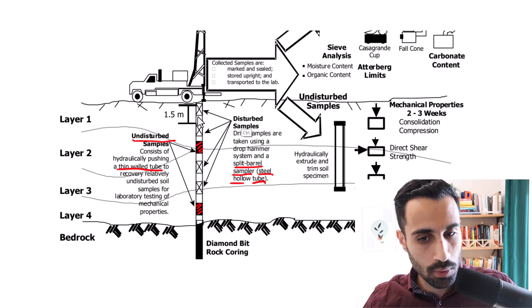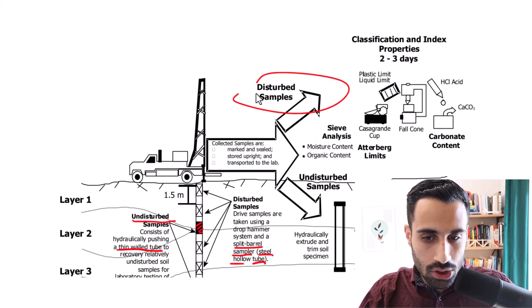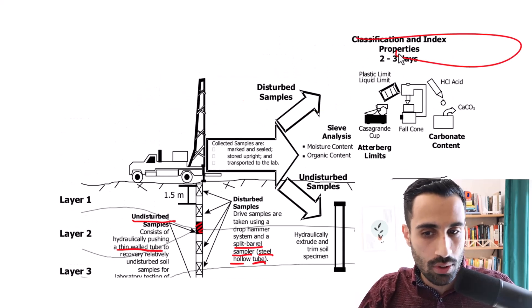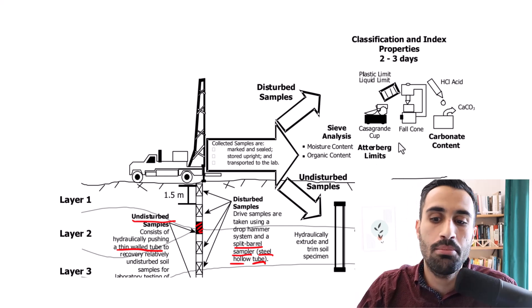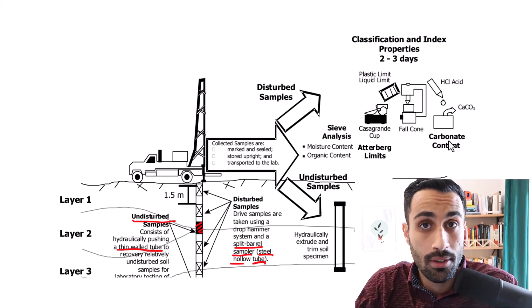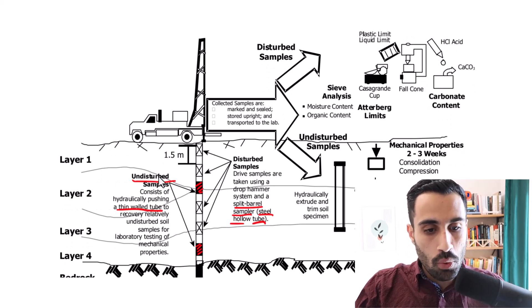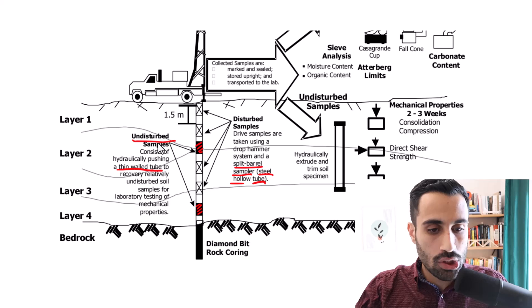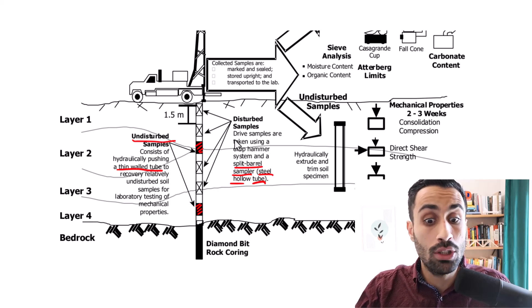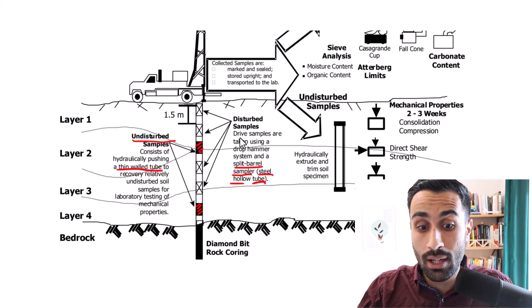These are disturbed samples. And we will look at these disturbed and do the soil classification: sieve analysis, Atterberg limits. We can even do the carbon content test for the disturbed samples. So these are what we do: undisturbed, disturbed. Undisturbed, thin walled Shelby tube. Disturbed, the split spoon barrel.